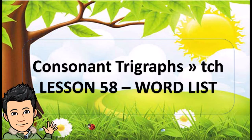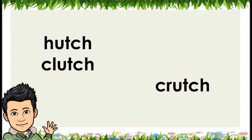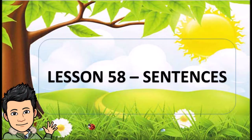Consonant Trigraphs TCH — Lesson 58. Word List: Etch, Fetch, Sketch, Stretch, Notch, Botch, Blotch, Scotch, Splotch, Dutch, Hutch, Clutch, Crutch.